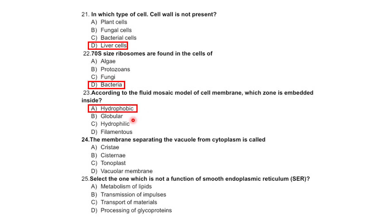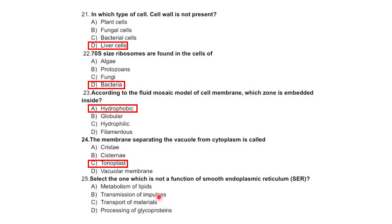The membrane separating the vacuole from the cytoplasm is called the cristae, sister membrane, tonoplast, or regular membrane — correct option is tonoplast. Select the one which is not a function of smooth endoplasmic reticulum: metabolism of lipids, transmission of impulses, transmission of materials, or processing of glycoproteins.